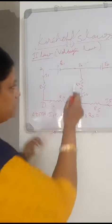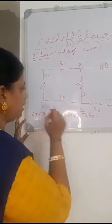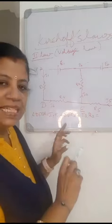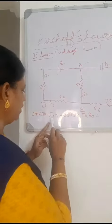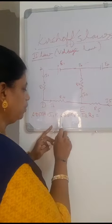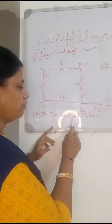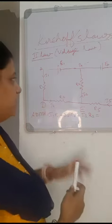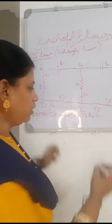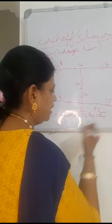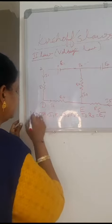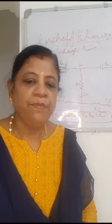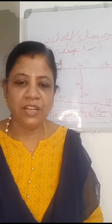This is the Voltage Law — Kirchhoff's Second Law. For one closed network of conductors, the sum of the product of current and resistance value: i1·r1 plus i4·r4 plus i2·r2 is equal to the sum of the EMF in the circuit.